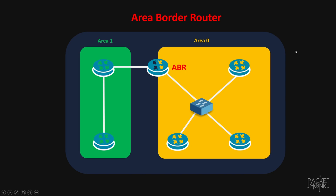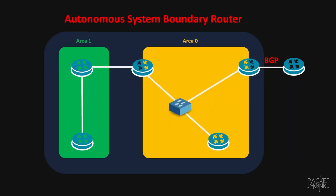Next one is ASBR. When OSPF interacts with some other routing protocols, the ASBR is the router which will inject those external routes into the OSPF domain. Here in this example, this router is in area zero but it also connects to another router and they run BGP between them. So these BGP routes will get injected into the OSPF domain by this router. We call this router the autonomous system boundary router.